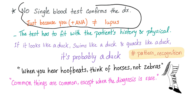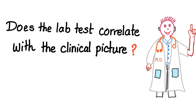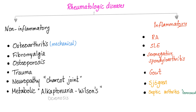No single blood test can confirm the diagnosis. The crucial question is: does the lab test correlate with the clinical picture? Whenever you see a patient with a rheumatological problem — joint pain, for example — ask yourself: is it non-inflammatory or inflammatory? Because septic arthritis is an emergency.